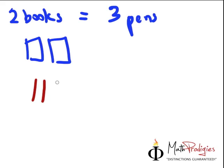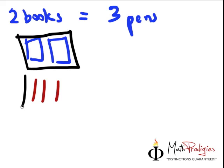And two books is the same cost as three pens. One, two, and three. You can draw that very simple. So this equals to the same cost as this. So this is one group and this is the same cost as this.